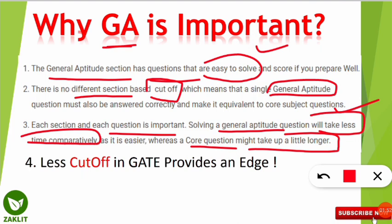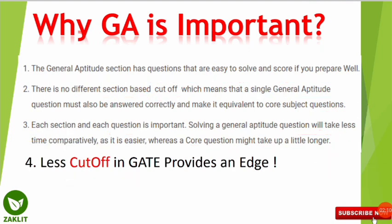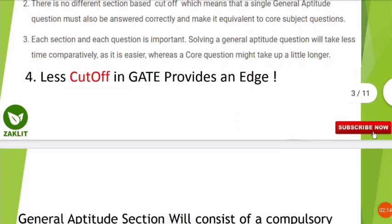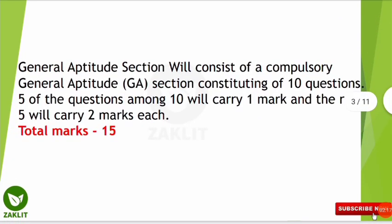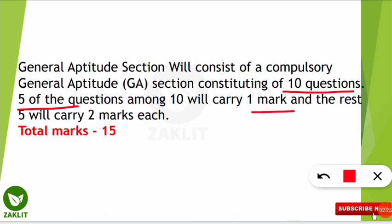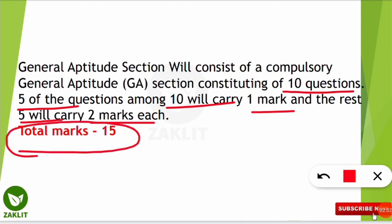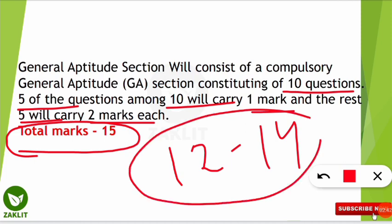The next and very important point is the low cutoff in GATE. From previous years, the average cutoff for the general category is around 40 to 45, which is much lower than UGC or CSIR. The general aptitude section mostly consists of 10 questions — 5 questions carrying 1 mark each and 5 questions carrying 2 marks each — totaling 15 marks.